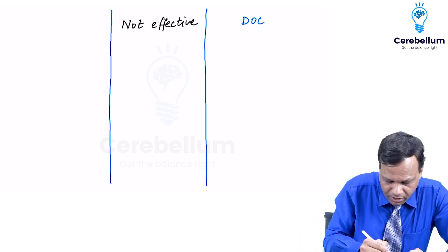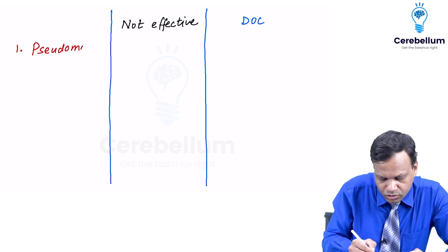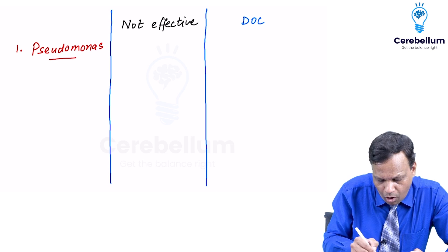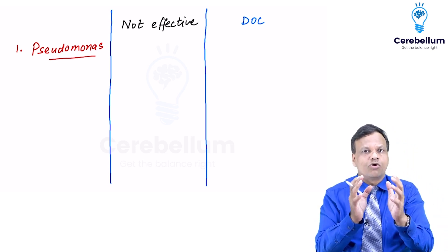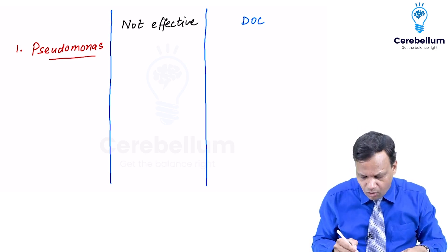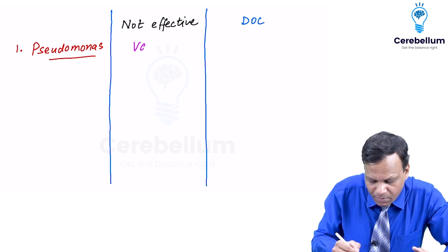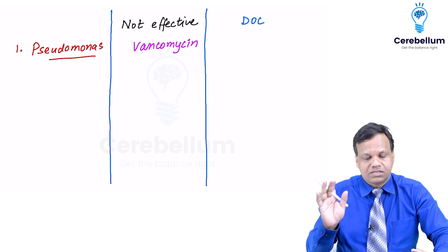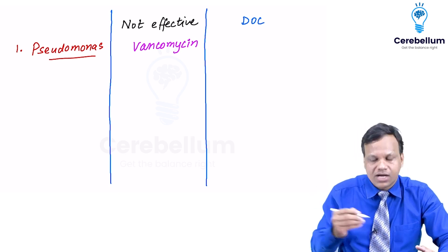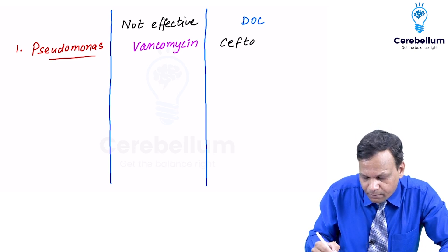The first and most important topic is Pseudomonas. The question is asked as 'all of the following are effective against Pseudomonas except.' They keep changing the three effective drugs, but the answer always remains the same — vancomycin. Remember, vancomycin is only for gram-positive bacteria; it is not for Pseudomonas. The drug of choice for Pseudomonas is Ceftazidime plus any aminoglycoside.